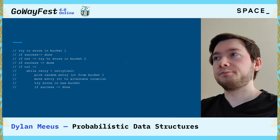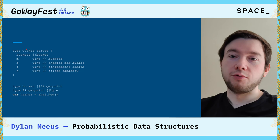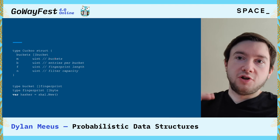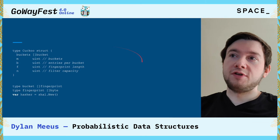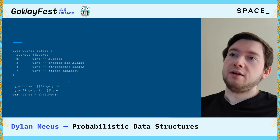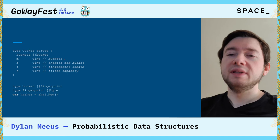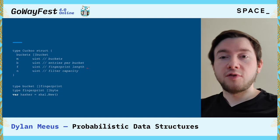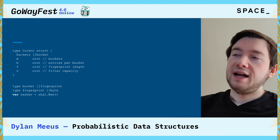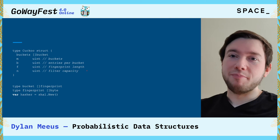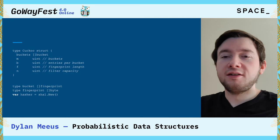In Go code, our struct is the cuckoo filter. We have a slice of buckets — the number of rows we saw in the image — and each bucket stores a slice of fingerprints. A fingerprint is a slice of bytes, essentially a string or identifier. We also keep track of M (the amount of buckets), entries per bucket, the length of our fingerprint, and a capacity for our filter. These variable names map to the paper linked earlier so it's easy to follow along.